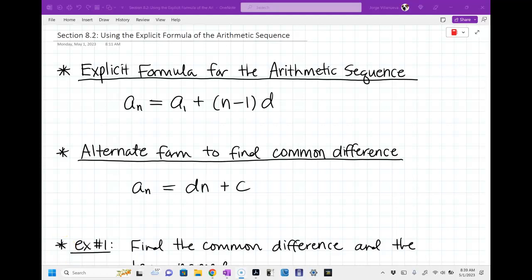Alright, so we're doing section 8.2. This is the second lesson from chapter 8. This is going to be the second section that's on your quiz on Wednesday. And this is basically just utilizing the explicit formula for the arithmetic sequence. So we're going to try to use it a little bit more.